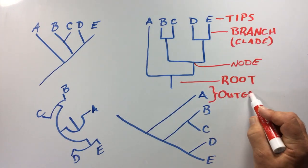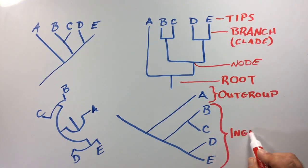The outgroup is a sister species that is used as a basis for comparison. The species that are the focus of the study are called the ingroup.